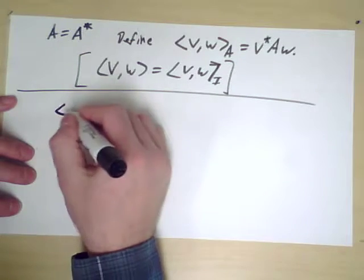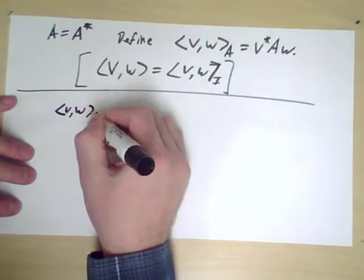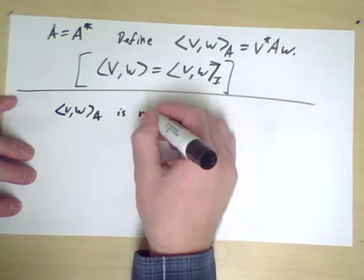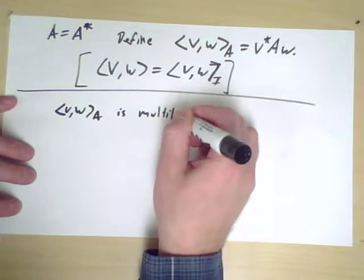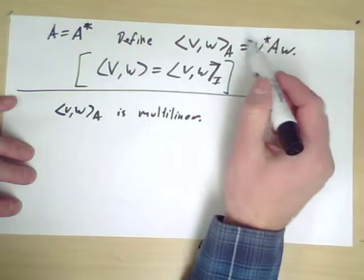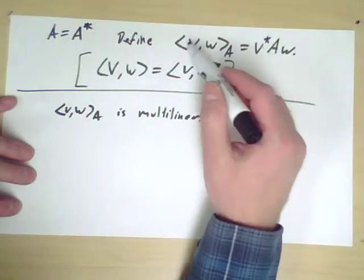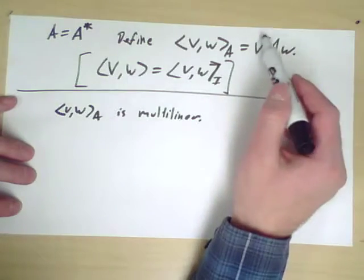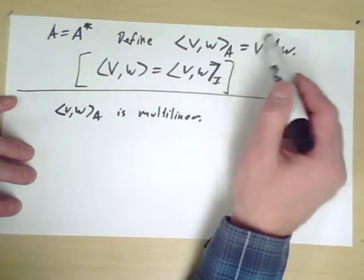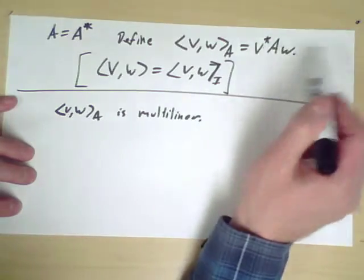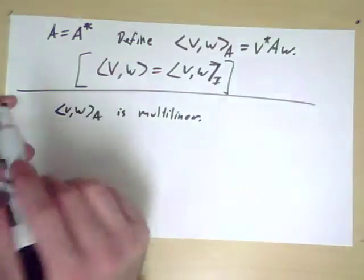First of all, it's certainly multilinear. Since it's based on matrix multiplication, if I scale V or W, the result scales appropriately. If I say V1 plus V2 and insert that here, or W1 plus W2, I can distribute as appropriate.